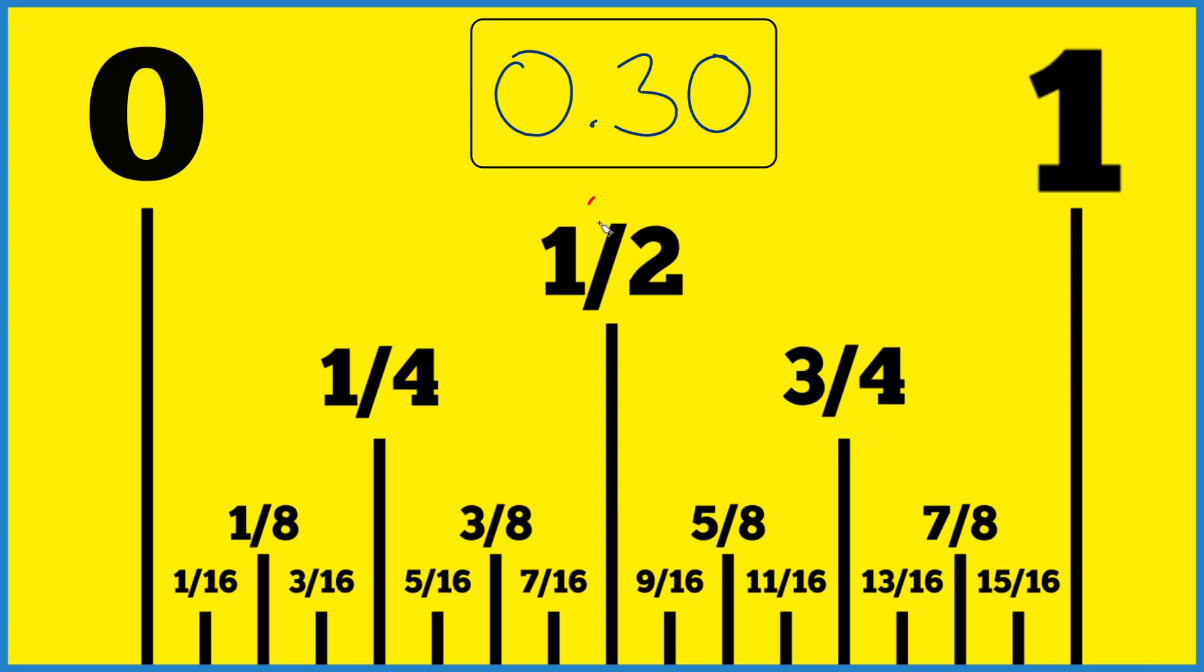So 1 half, that's 0.5, 1 divided by 2. And 1 fourth, that's 0.25. You divide 1 by 4, you get 0.25.